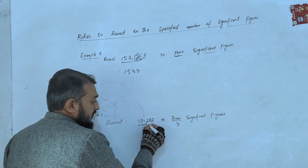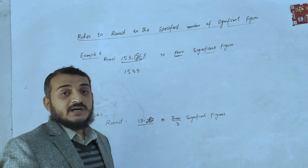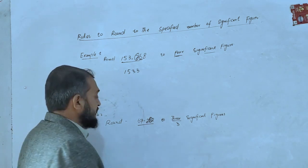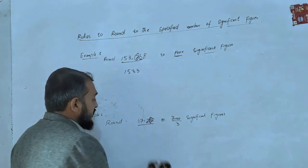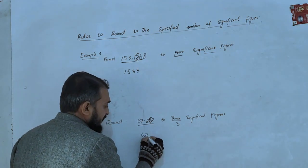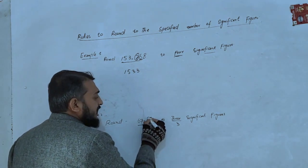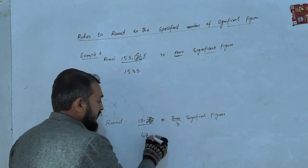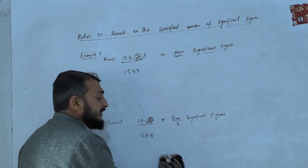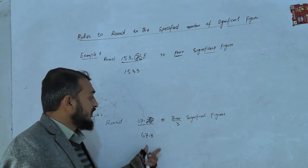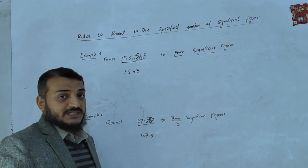With 3 significant figures, we look at the next digit to decide whether to round up or keep the number. Since the digit is greater, we round up, giving us 67.3.